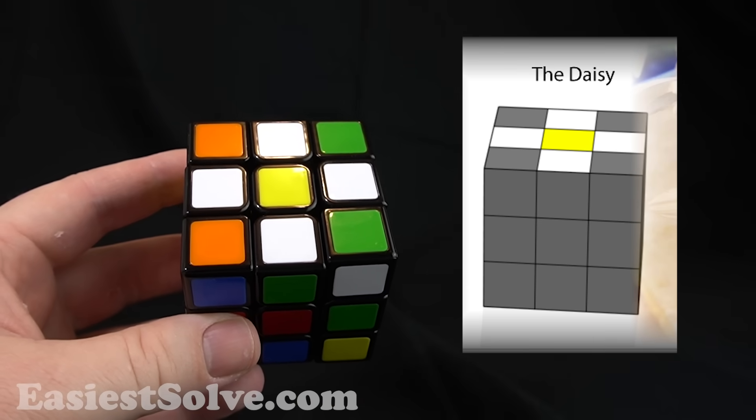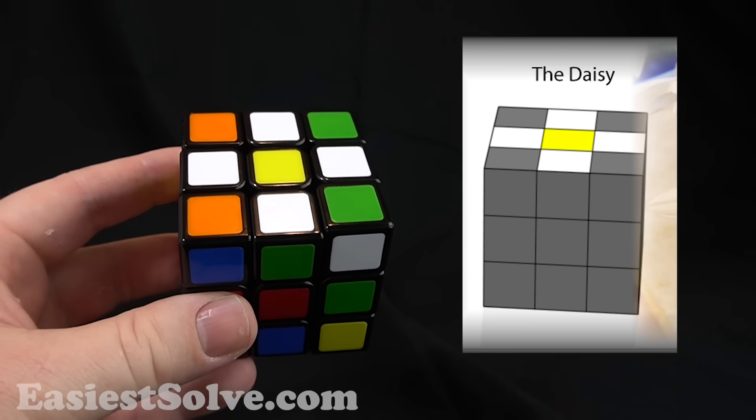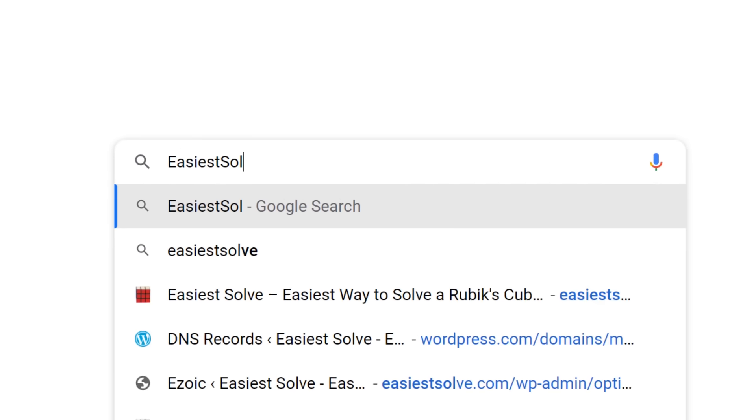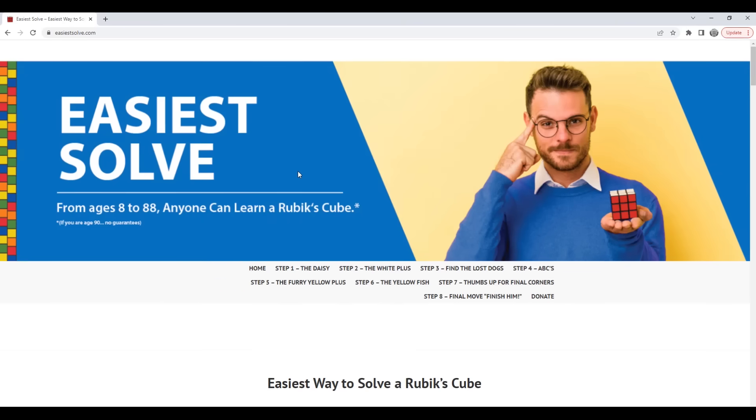If you can go from a scrambled cube all the way to the daisy in under one minute, then you're ready to go to the next step. Go to easiestsolve.com and click on step two.